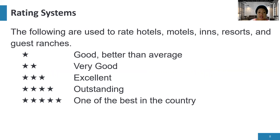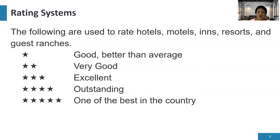Now let's go to the rating systems. These are the hotel ratings for accommodation types based on DOT standards. The lowest rating is one star and the highest is five stars. A one-star rating means you have good, better-than-average hotel services and facilities. A five-star rating means you are one of the best in the country.